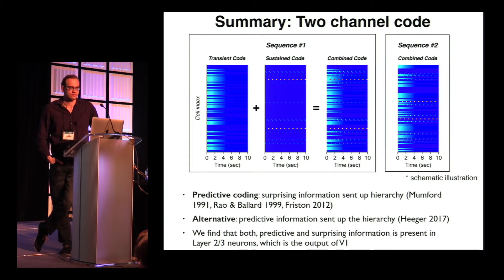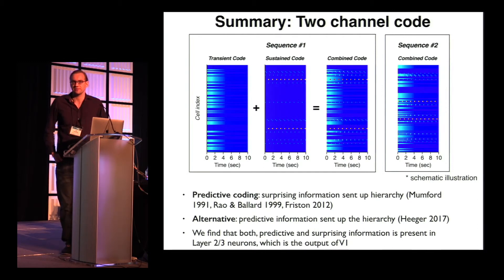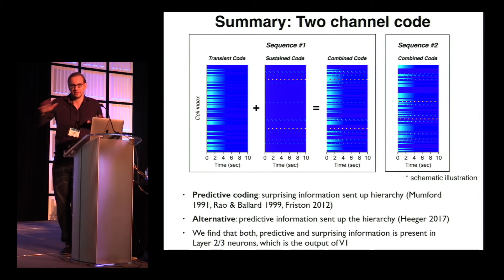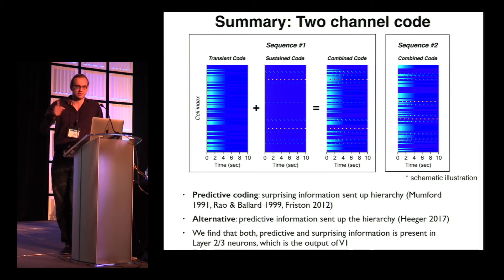Yes, we tried the same with a random order of stimuli, and it looks pretty much the same. With a repeated sequence you ensure cells adapt at constant intervals. We are also recording from extrastriate areas right now, and it seems some of those areas do show this kind of order dependence — so switching the order between two frames can also elicit a novelty response.